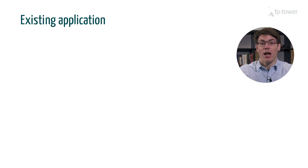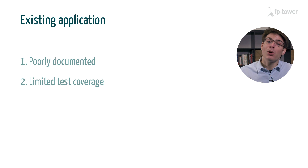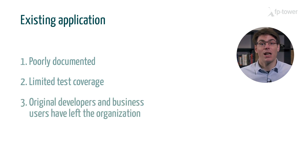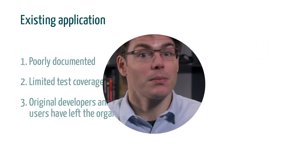This means you don't have to worry about backward compatibility, data migrations, and all the other concerns that come from maintaining a real world application. On the other hand, when you join an existing project, there is a good chance that it's poorly documented and has little test coverage, and some of the original developers and business users have left the organization. For all these reasons, it's difficult to know why the code works in a particular way, which makes it very difficult to update without breaking the application. One of the most important characteristics of a code base is its evolvability — how easy it is to adapt the application to new business or regulatory requirements — and this is an area where functional programming really shines.